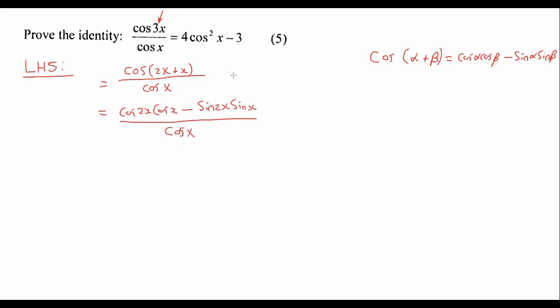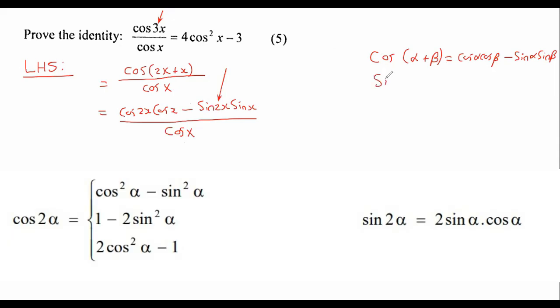Okay, now this one over here, sin 2x, that's a nice one. The reason is if you look on your formula sheet, sin 2x can only turn into, it can only become one thing. So that's a very easy one.